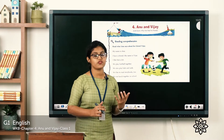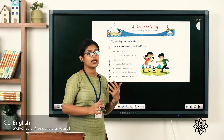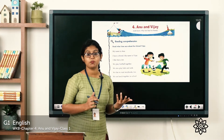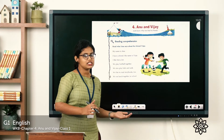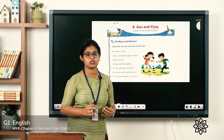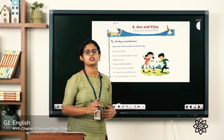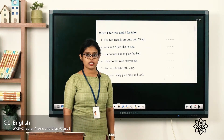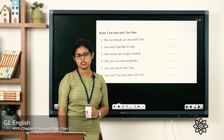So this is Anu, and Anu's friend's name is Vijay. They do everything together — they like to play football, read storybooks, play hide and seek, and eat their lunch together. That is about Anu's friend named Vijay. Below that you have some questions. Let's read out and answer these questions. First I'm going to read out the passage and you have to write the answer, then let's discuss the answers.